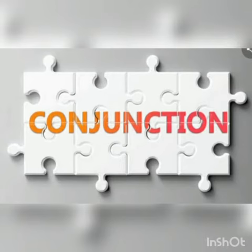A conjunction is a word used to join words or sentences. Examples: and, but, because, or, so, still, if, as, before, through are the examples of conjunctions.